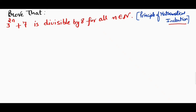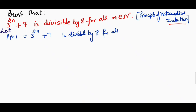So first, we will take P(n), and P(n) is equal to 3 raised to the power 2n plus 7, and this is divisible by 8 for all n belonging to natural numbers. After that we have to take two steps. Step number one: we will put n equal to 1. We will see whether this equation is divisible by 8 or not.